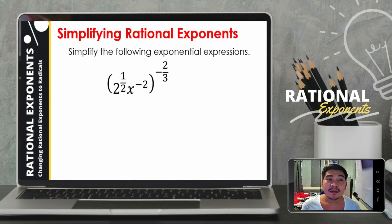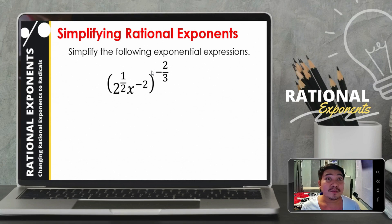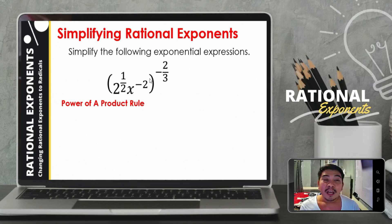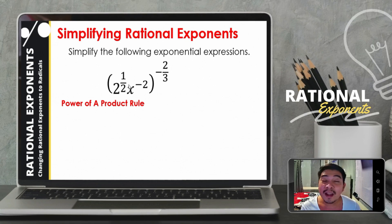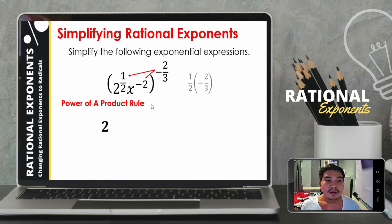How about this example: the quantity 2 raised to 1 half, x raised to negative 2, all raised to negative 2 thirds. First, we apply the power of a product rule, where the exponent outside the parentheses is multiplied to each of the exponents inside. We have 1 half and negative 2 inside. We copy the first base, which is 2, then multiply 1 half and negative 2 thirds.